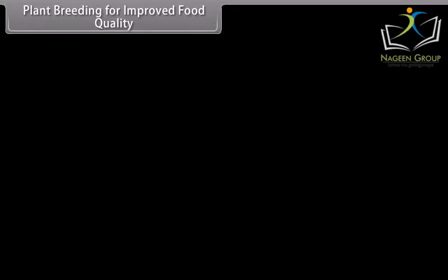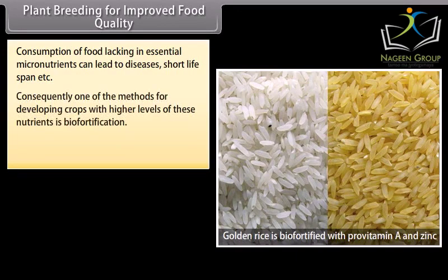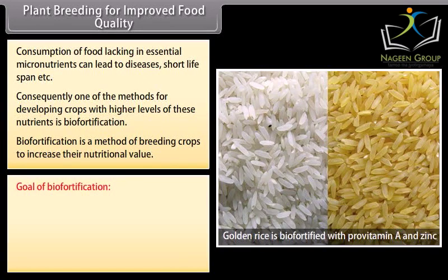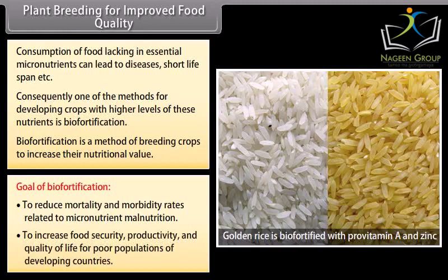Consumption of food lacking in essential micronutrients can lead to diseases and short life span. One method for developing crops with higher levels of nutrients is biofortification. Biofortification is a method of breeding crops to increase their nutritional value. Goals include reducing mortality and morbidity rates related to micronutrient malnutrition, and increasing food security, productivity, and quality of life for poor populations in developing countries.